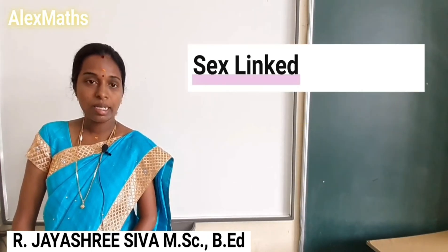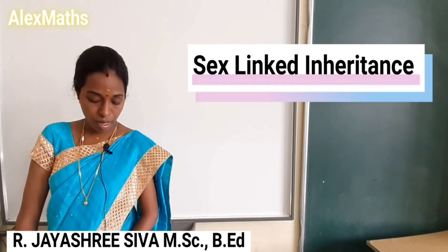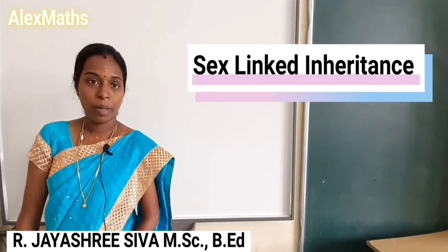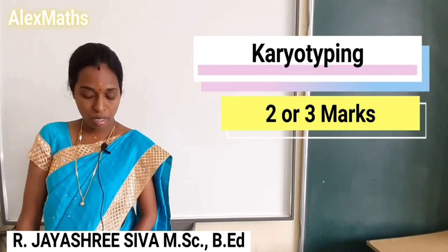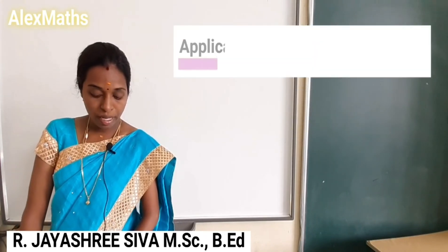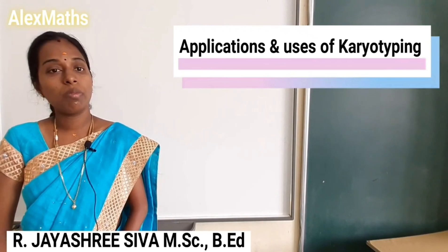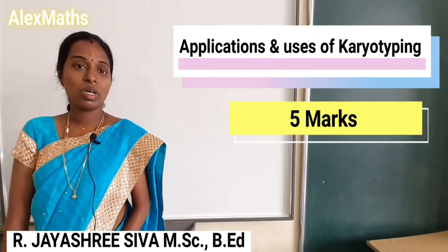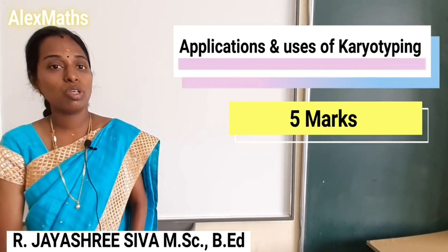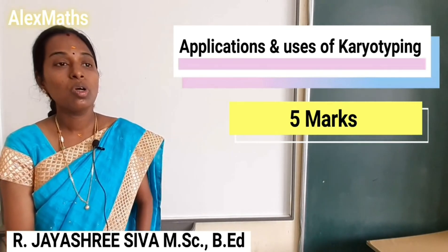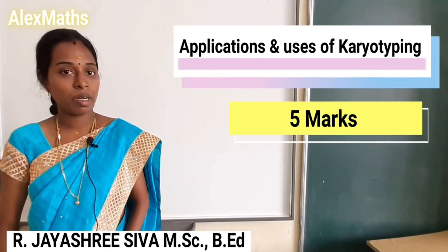Next: sex-linked inheritance — what is known as sex-linked inheritance? That is followed by karyotyping. Define karyotyping or explain what is karyotyping — worth 2 or 3 marks. Also, applications and uses of karyotyping. When you learn a topic, cover the definition, advantages, and disadvantages. Karyotyping questions can appear for 2 marks, 3 marks, or 5 marks.